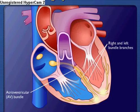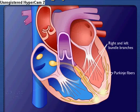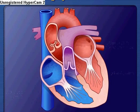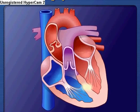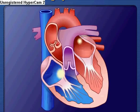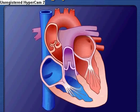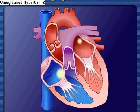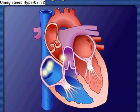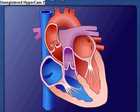Action potentials are carried by the Purkinje fibers from the bundle branches to the ventricular walls. The rapid conduction from the atrioventricular bundle to the ends of the Purkinje fibers allows the ventricular muscle cells to contract in unison, providing a strong contraction.